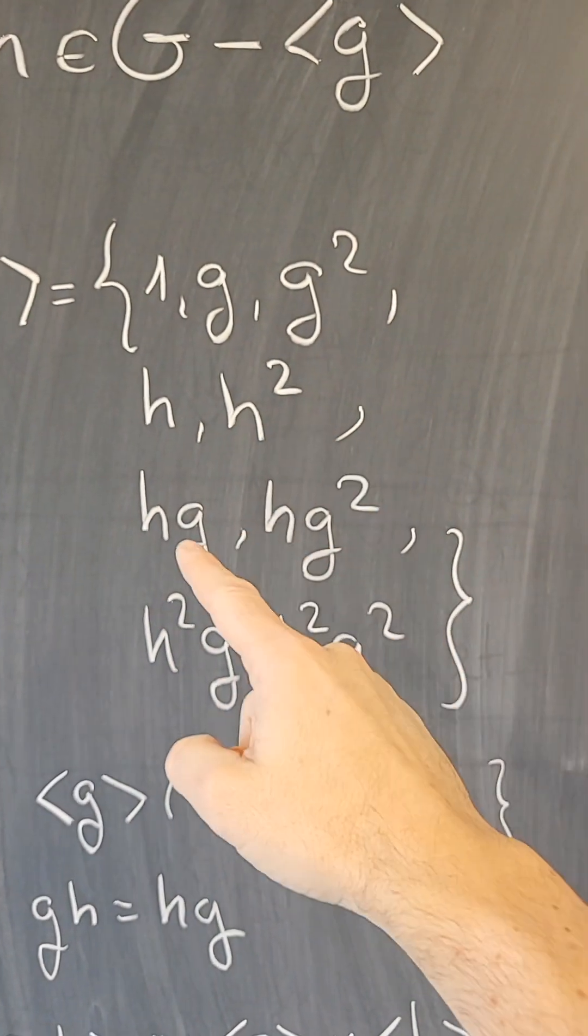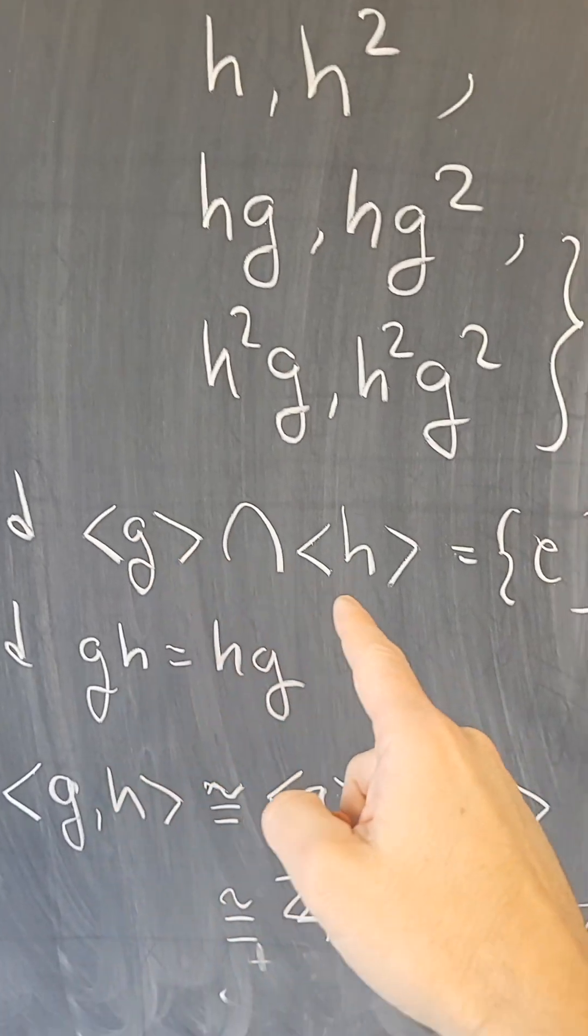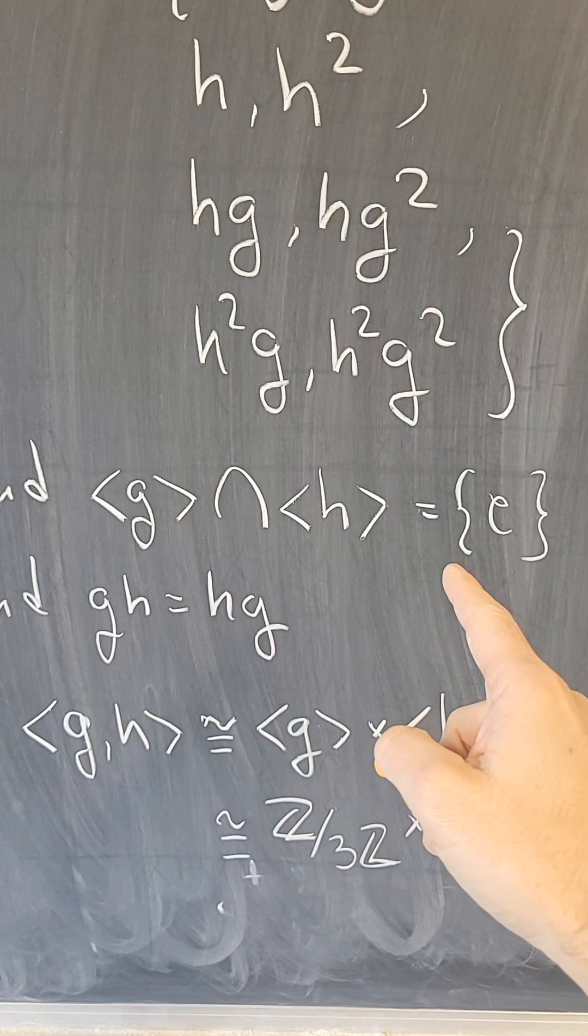There's 3, 5, 7, 9 elements, and the subgroups generated by g and h are disjoint.